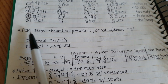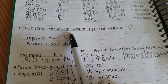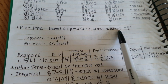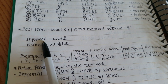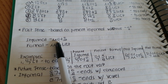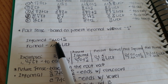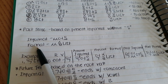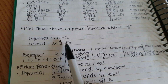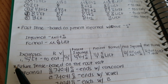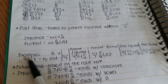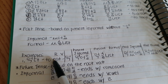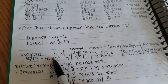Now for the past tense — it is based on the present informal without 'yo'. The informal past would use 'sseo-yo', and the formal past uses 'ss-sumnida'. For example, 'mokta' in English means 'to eat'.